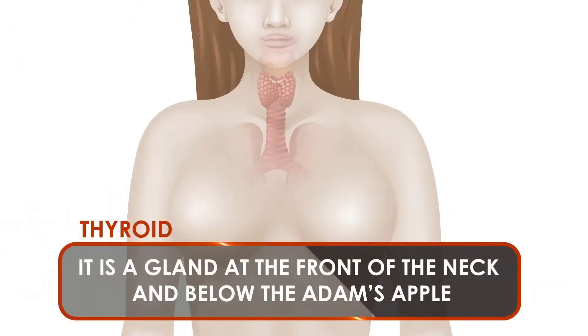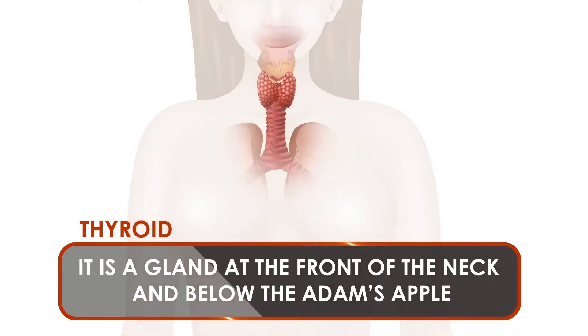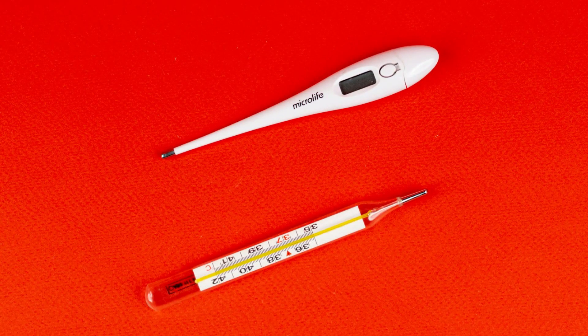Before we dive into the relationship between the thyroid and periods, let's first understand what the thyroid is. The thyroid is a small gland located in your neck that produces hormones that control your metabolism. The hormones produced by the thyroid gland are responsible for regulating various bodily functions such as heart rate, body temperature, and weight. When this gland doesn't function correctly, it can lead to a range of health issues, including irregular periods.